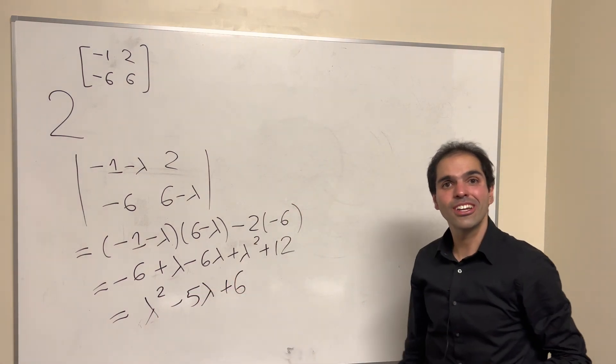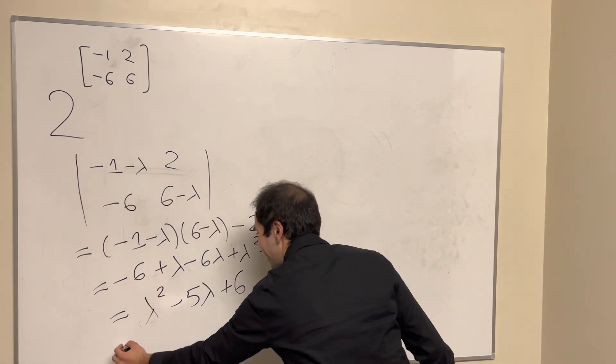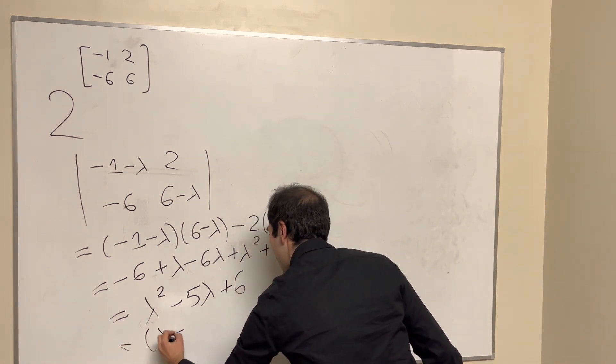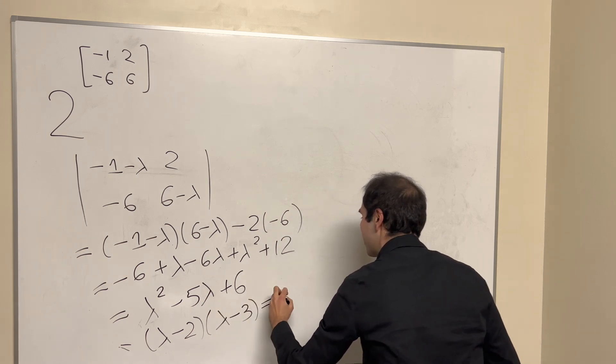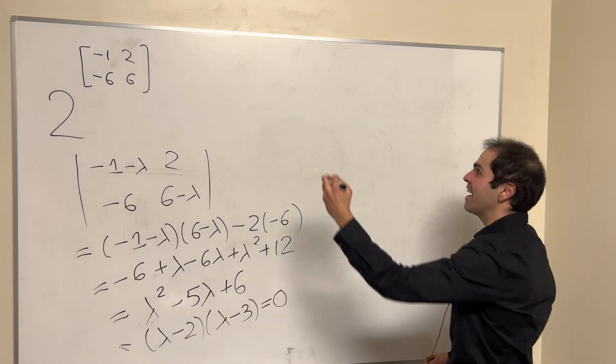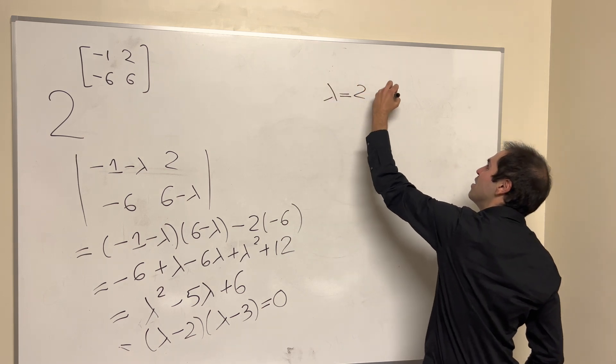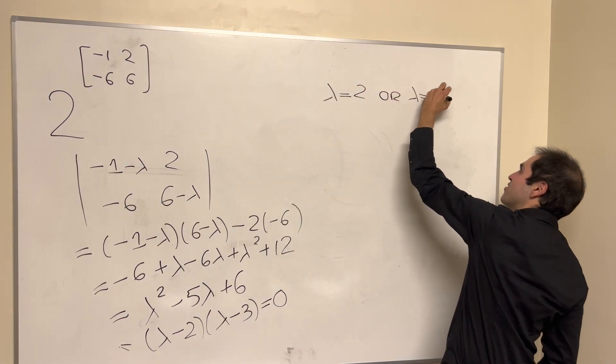which is one of our favorite polynomials to factor out, because then we get lambda minus 2 times lambda minus 3 equals 0. So, and therefore, the eigenvalues are lambda equals 2, or lambda equals 3.